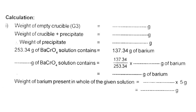253.34 grams of barium chromate contains 137.34 grams of barium. Therefore, from the weight of the precipitate, the amount of barium is calculated as: weight of barium = (137.34 / 253.34) × weight of precipitate, which gives the weight of barium in grams.